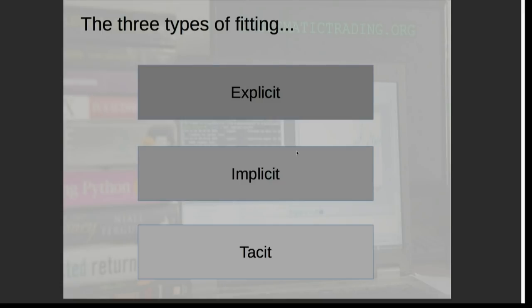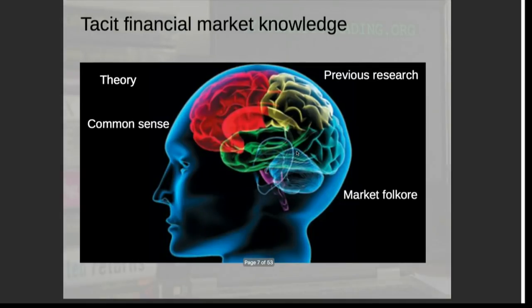What kinds of tacit knowledge are there? There's theory — stuff you can read in books. There's previous research published by academics or investment banks. There's what I call market folklore: even if no academics had written about trend following, most people in this room would know that it existed because it's been part of the market for so long. And finally, there's common sense — for example, that if you design a trading strategy that buys low and sells high, you'll make money.